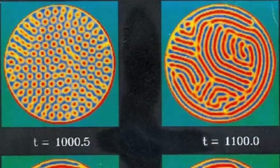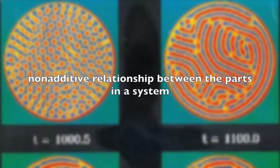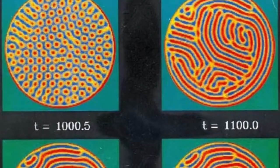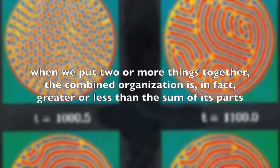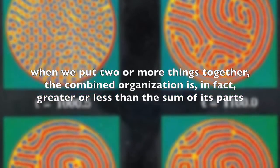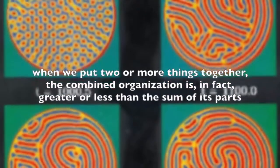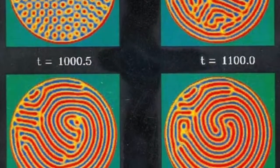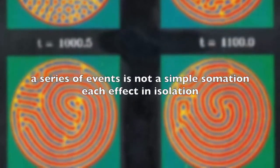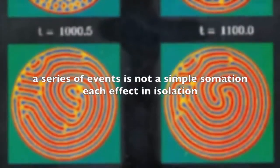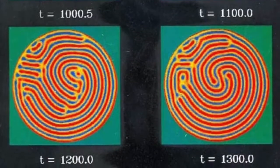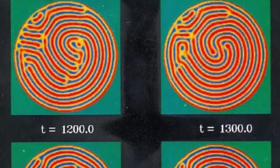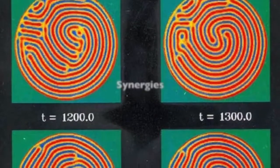The term non-linearity refers to a non-additive relationship between the parts in a system or between events over time. This means that when we put two or more things together, the combined organization is in fact greater or less than the sum of its parts. Likewise, non-linearity may be present over time, meaning that a series of events is not a simple summation of each effect in isolation. This non-additive nature is the product of the way that the parts interact — these non-additive interactions are called synergies.